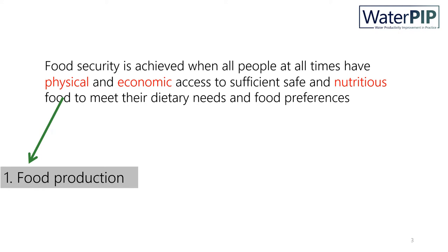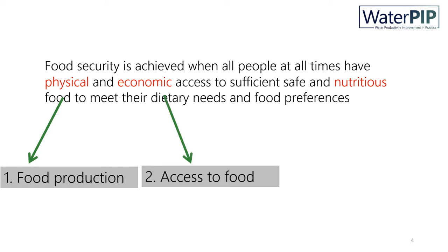Let's first look at the first element, physical access. This is linked to food production. You first need to produce food to be able to access it physically, and you also need the infrastructure to transport food to where it is needed.